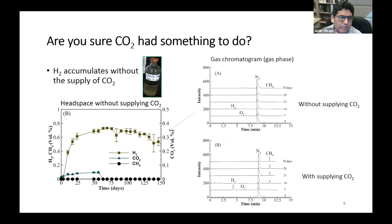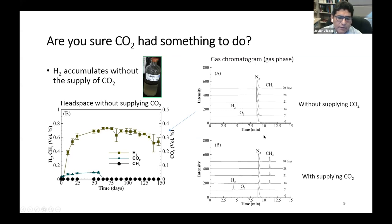You might be wondering whether CO2 had something to do with the biodegradation of oil — the answer is yes. This figure shows how the concentration of gases changes in the headspace without the supply of carbon dioxide. Without CO2, hydrogen accumulates and remains practically constant in the headspace, and methane formation is practically zero or below detection limits. We don't see the eventual formation of methane as we did with the supply of carbon dioxide, as shown in this representative gas chromatogram of the headspace.